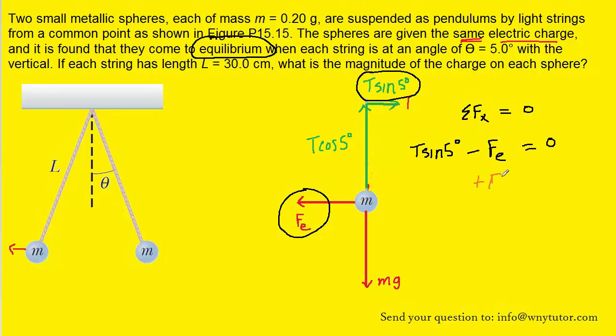We could then add the electrical force over to the other side. And when we do that, we can see that the electrical force is equal in magnitude to the tension times the sine of 5 degrees.